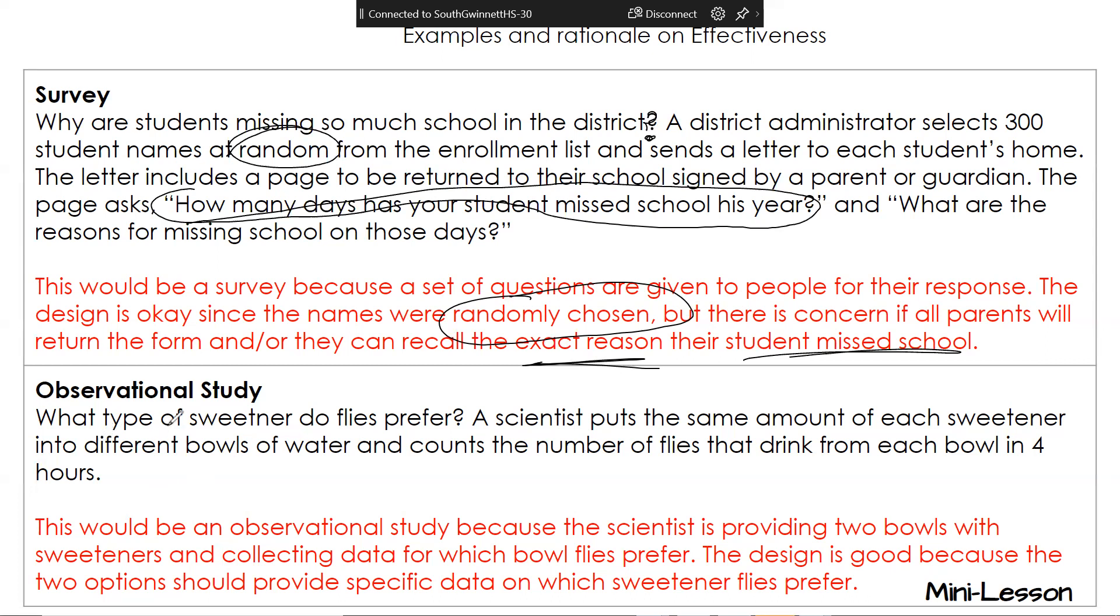For observational study, what type of sweetener do flies prefer? So a scientist puts the same amount of sweetener. This section is a lot of reading. There will be an equation. It's not too bad. There's one equation that you have to memorize, but we're going to talk about that in the next couple of days. So don't panic yet. Maybe later. The scientist would count the number of flies that drink from each bowl in four hours. So this would be an observational study because the scientist is providing two bowls and collecting data for which one the flies prefer. So he counts the number of flies.